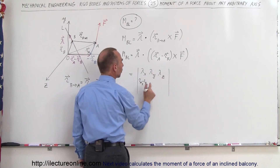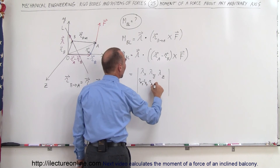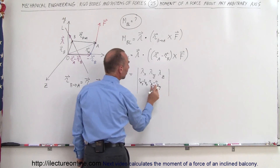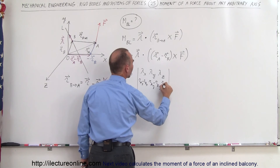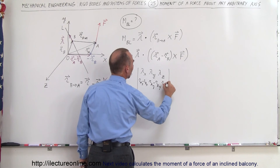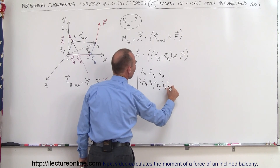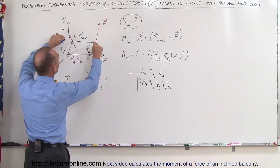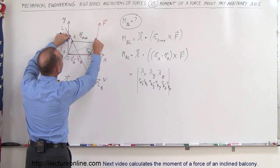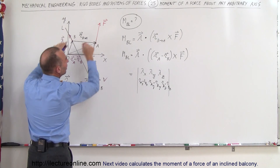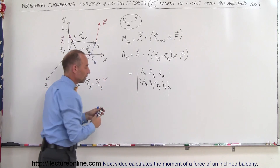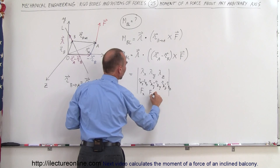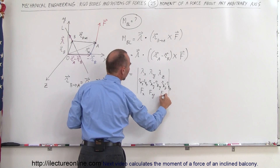Then the difference of their y-coordinates: R_Ay minus R_By, and the difference of their z-components: R_Az minus R_Bz. Those are the three quantities — the difference in x-components, y-components, and z-components of A and B — and finally the force components: F_x, F_y, and F_z.